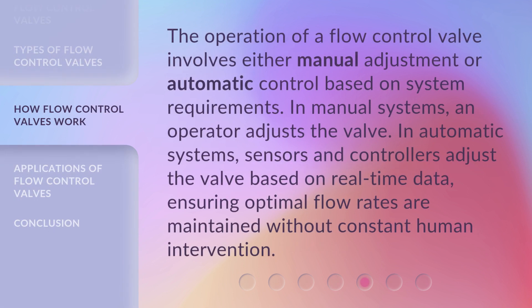The operation of a flow control valve involves either manual adjustment or automatic control based on system requirements. In manual systems, an operator adjusts the valve. In automatic systems, sensors and controllers adjust the valve based on real-time data, ensuring optimal flow rates are maintained without constant human intervention.